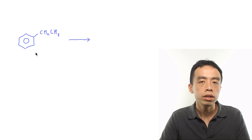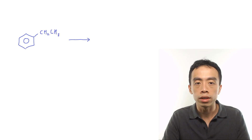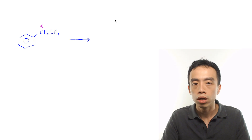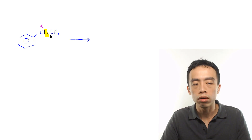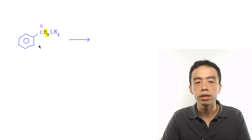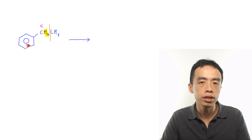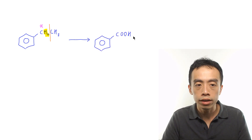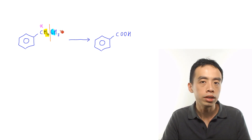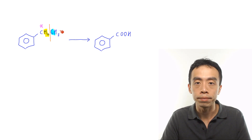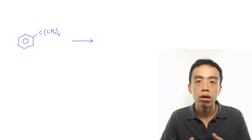For the second example, if I have ethyl benzene and oxidize it using KMnO4, would I get benzoic acid? The alpha carbon here has two hydrogens, more than sufficient, so this portion becomes benzoic acid. The carbon-carbon bond breaks, and the other carbon — being just one carbon by itself — is oxidized to CO2 and water.